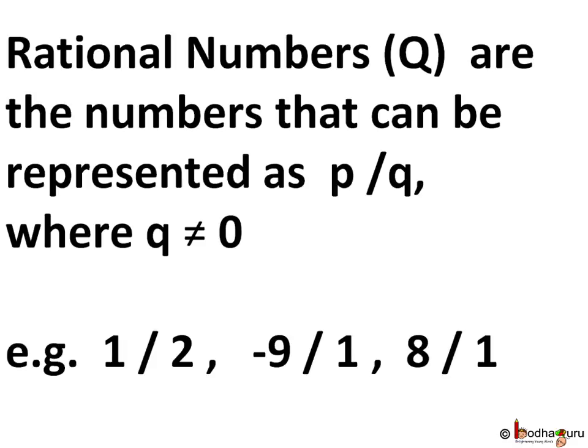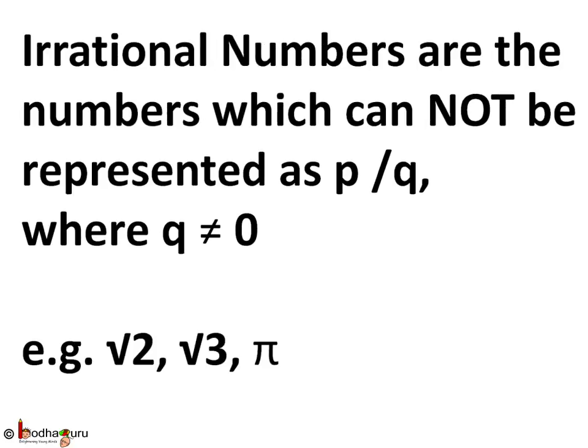We have also seen in our last video there are some non-terminating recurring decimals like 1.626262 and so on, which can also be converted to a rational number form. But there are some numbers which are called irrational numbers.